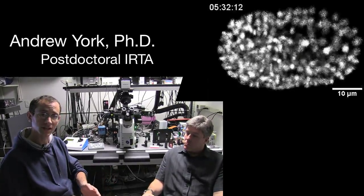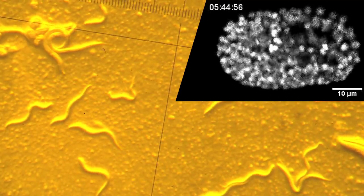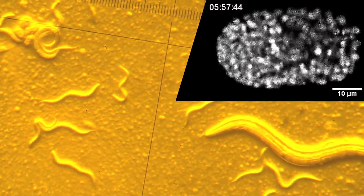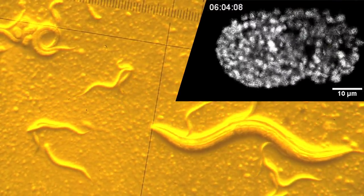Biologists want to look at a wide range of samples. Sometimes you want to look at single cells, but sometimes you want to look at tissues or even whole organisms. The type of microscope we were trying to improve upon up until now has only been suitable for single cells.